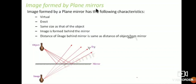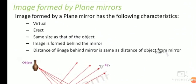Now let us look at the image formed by a plane mirror. A plane mirror has one smooth surface and one rough surface; the image is formed on the smooth surface. The image formed by a plane mirror has the following characteristics: the image is virtual, not real; the image is erect; and the image is the same size as the object.